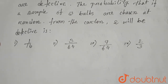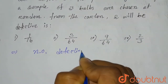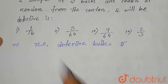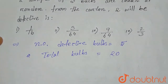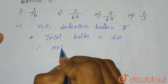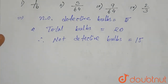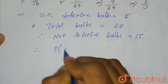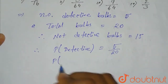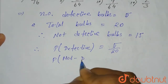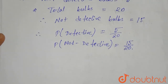First, let's find the probability of choosing a defective bulb and the probability of choosing a non-defective bulb. The number of defective bulbs is 5, and the total bulbs are 20, so the non-defective bulbs will be 20 minus 5, which equals 15. Therefore, probability of defective equals 5 divided by 20, and probability of non-defective equals 15 by 20. The choosing of bulbs are independent trials.